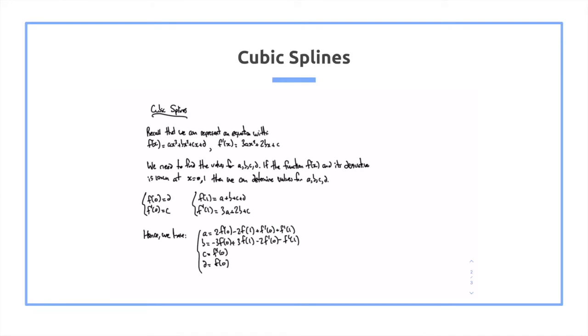Cubic splines are interesting. Consider the case where we have a cubic equation ax cubed plus bx squared plus cx plus v, and then we also have its derivative. If we know the values between 0 and 1, at point x equals 0 and 1, as well as its derivatives, for example, the equation could be clamped,